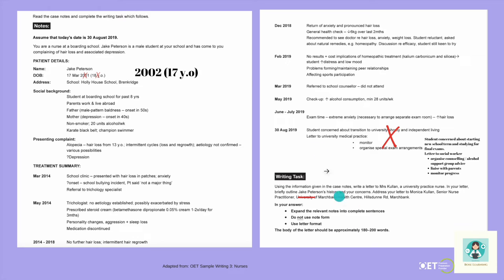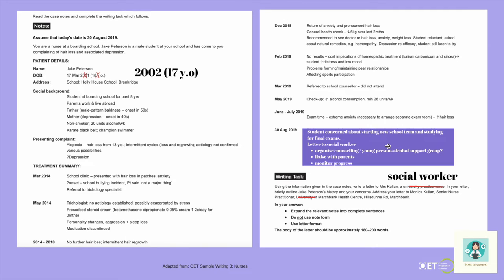I've changed this slightly so that Jake is now 17 — a year younger — and rather than writing to the university, you are going to be writing to a social worker. You're still the nurse at the boarding school, but now the student is concerned about starting the new term and studying for final exams. In the UK, the new term starts in September. You have to write a letter to the social worker to organise counselling and support, an alcohol support group, liaise with his parents, and monitor progress.